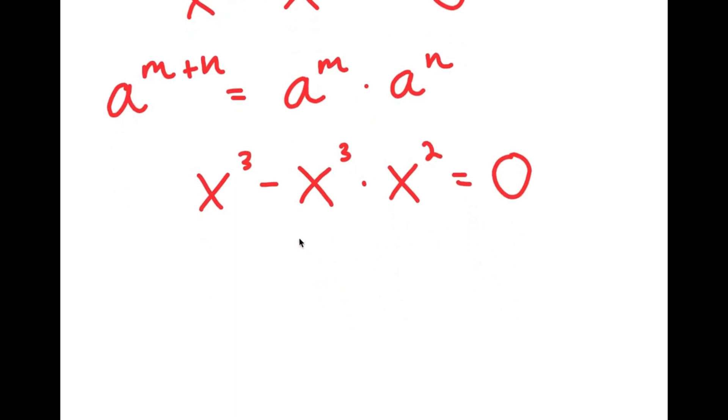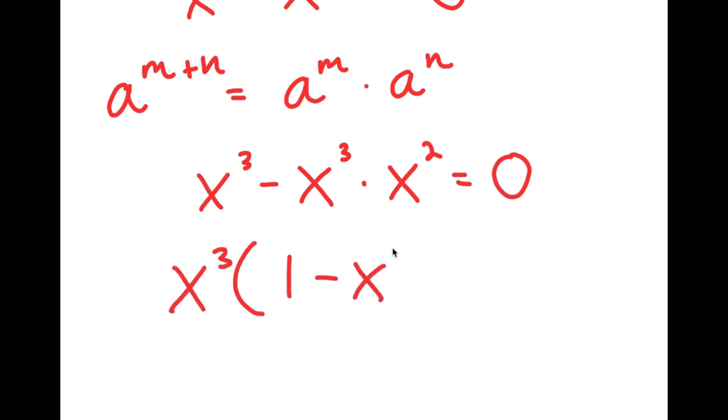Now I'm going to factor out x to the power of 3. So I get x to the power of 3 times 1 minus x squared.